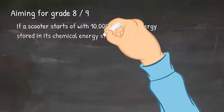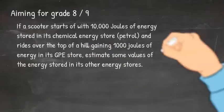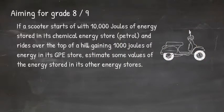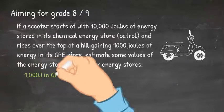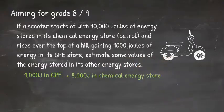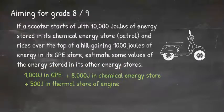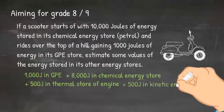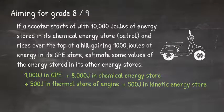So let's see if you can do this by yourself. If a scooter starts off with 10,000 joules of energy stored in its chemical energy store in the petrol and rides over the top of a hill gaining 1000 joules of energy in its gravitational potential energy store, estimate some values of the energy stored in its other energy stores. There's no one right answer here. So let's say it's gained 1000 joules in its gravitational potential energy store. I'm then just going to assume it's got 8000 joules of energy left in its chemical energy store in its petrol, 500 joules stored in its thermal energy store of the engine because the engine is now warm, and 500 joules in its kinetic energy store because the scooter is moving. So in total the energy in our system is still 10,000 joules.